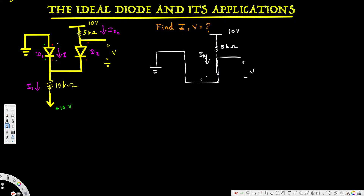Here we have a current flowing through this one — id2 — and then here we have a resistance of 10 kilohms, and this is i1. We are interested in finding the current i. The bottom voltage is negative 10V. Since this node is connected to ground, it is zero voltage, and with nothing in between, this node is also zero voltage.